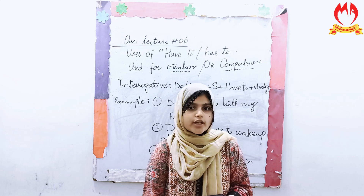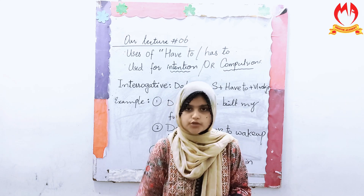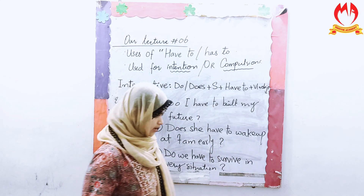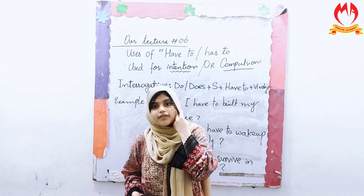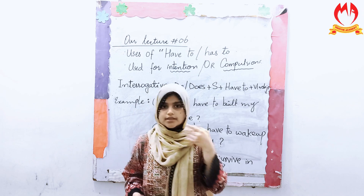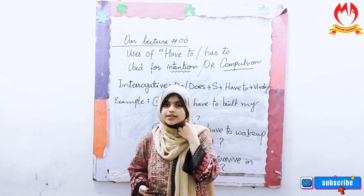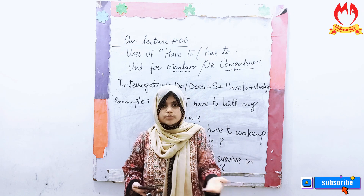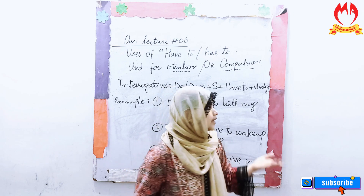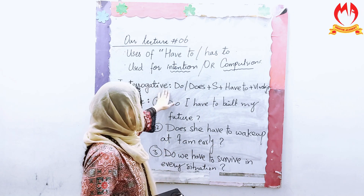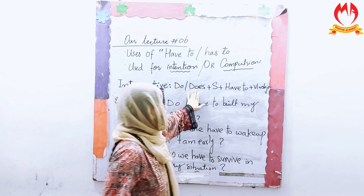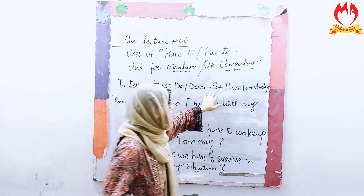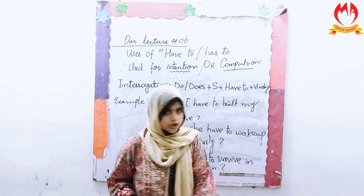Now the last type is the interrogative sentence — how we make questions using 'has to' and 'have to'. Look at the board. For interrogative sentences, we ask questions — from ourselves or to someone we are communicating with, our listener. The formula is: Do / Does + subject + have to + verb (first form) + object.